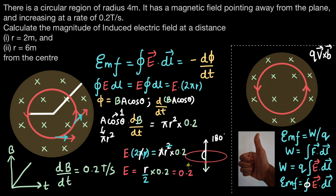The units of electric field: relating it to the change in potential per unit length, E = -ΔV/Δx, gives units of volts per meter.